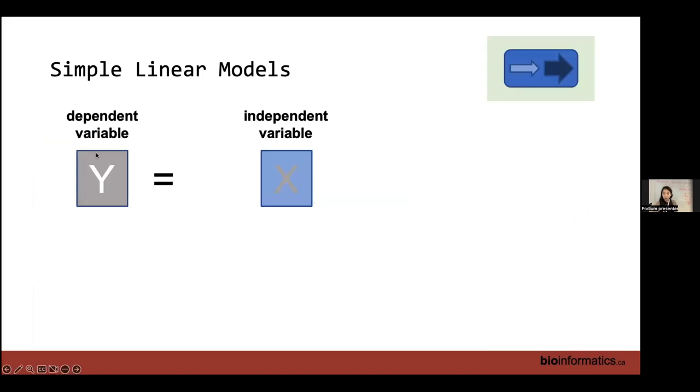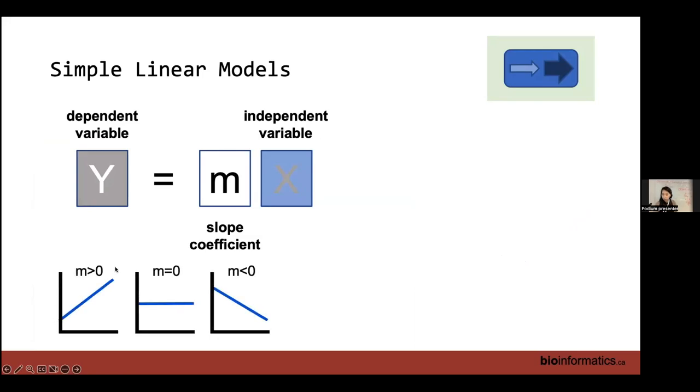So when we're modeling between our dependent and our independent variable, we're not likely to have a one-to-one relationship. We need some modifiers. So we have our slope coefficient. If we have a positive slope, that means as x increases, y increases. If we have our negative slope, as x increases, y decreases. And if we have no slope, this is what we saw with our data source. It's noise. You have dots everywhere. There's no good line that you can draw to show a correlation between your x and your y variable.